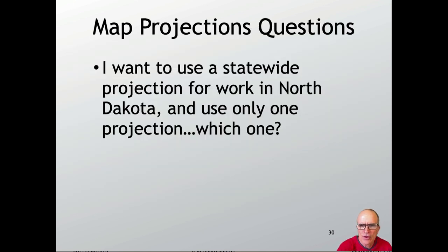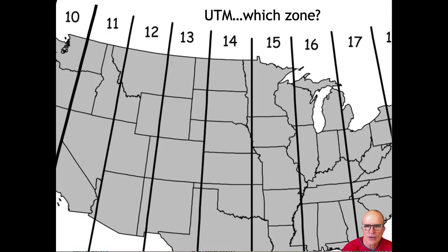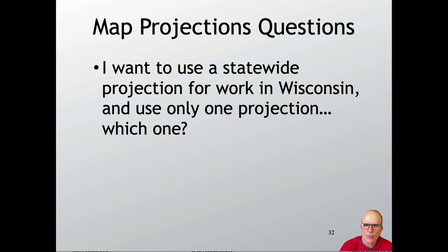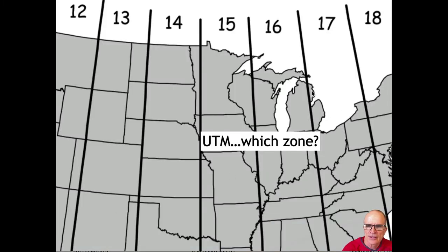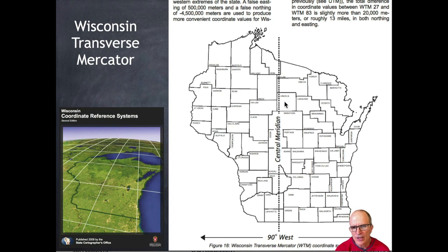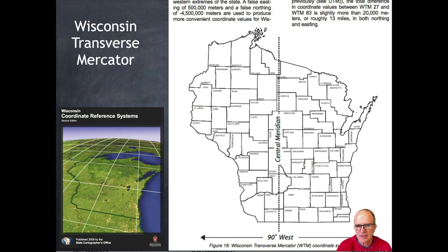If I want to use a state projection for work on North Dakota, I could use UTM Zone 14, which covers most of the state — the error gets bigger toward the west, but for statewide data it's about as good as I can get without a customized projection. For statewide work in Wisconsin, you could use either UTM zone, but Wisconsin defines the WTM with the central meridian through the center of the state. They convert their data into that from a lat-long system and have documented how to convert in both directions.